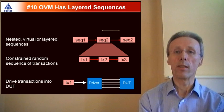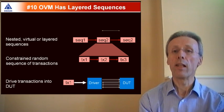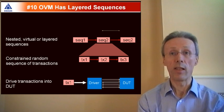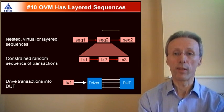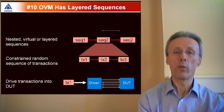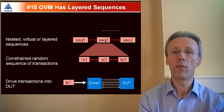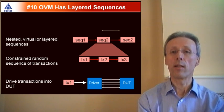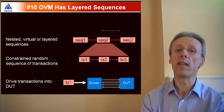With nested sequences, a higher-level sequence simply calls a series of lower-level sequences. With virtual sequences, a single virtual sequencer can start sequences on a number of individual sequencers connected to different interfaces on the design under test. So a virtual sequence can exercise multiple interfaces in parallel.